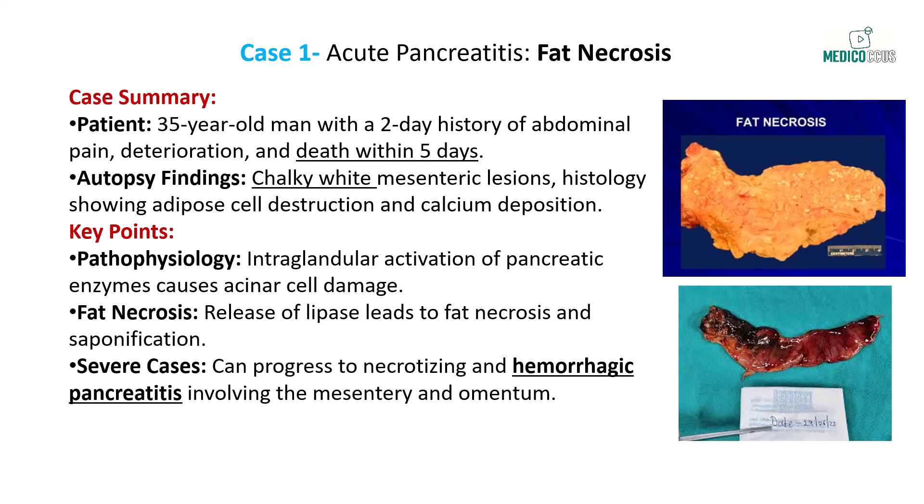This clinical scenario is most consistent with acute pancreatitis. Normally, pancreatic digestive enzymes are secreted in an inactive form to prevent autodigestion, becoming active only when they reach the duodenum. However, in acute pancreatitis, these enzymes become prematurely activated within the pancreas itself, leading to acinar cell damage and inflammation. The release of lipase and other digestive enzymes from the inflamed pancreas damages nearby adipose tissue. Liberated fatty acids then bind with calcium ions, precipitating as insoluble calcium salts in a process known as saponification, which gives the lesions their characteristic chalky white appearance. Microscopically, this is seen as necrotic adipocytes — cells that have lost their nuclei — accompanied by blue calcium deposits.